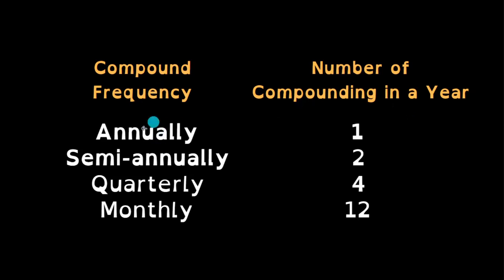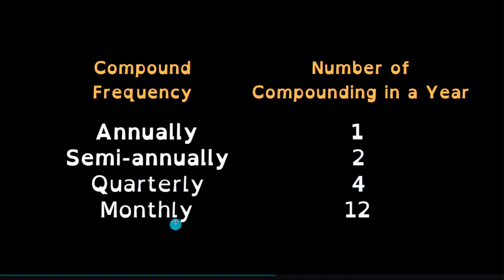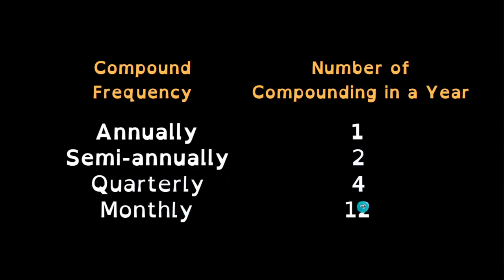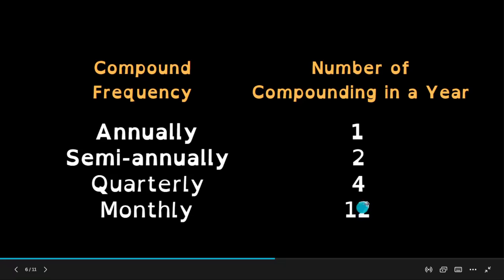If you say annually, that is equivalent to one compounding per year. Semi-annually is equivalent to two terms, so twice a year. We also have quarterly, meaning the number of terms is four. And monthly, the number of compounding terms is 12 times or 12 terms.